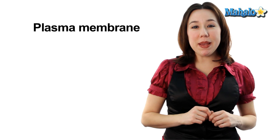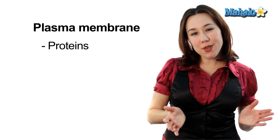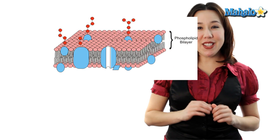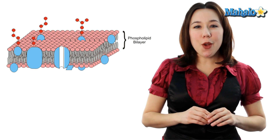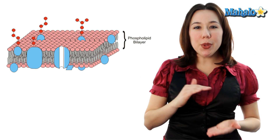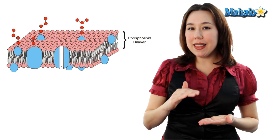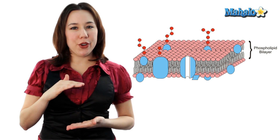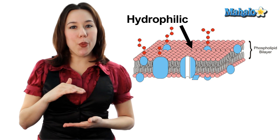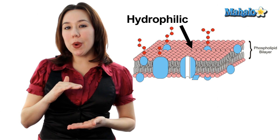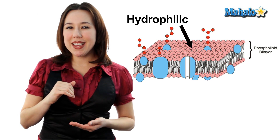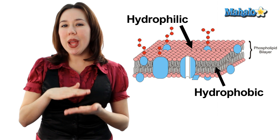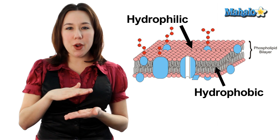The plasma membrane is made up of mostly proteins and special lipids called phospholipids. These phospholipids arrange in a double layer or bilayer arrangement. The top and the bottom of this bilayer arrangement are water loving or hydrophilic, and the inside of the tails is going to be water hating or hydrophobic.